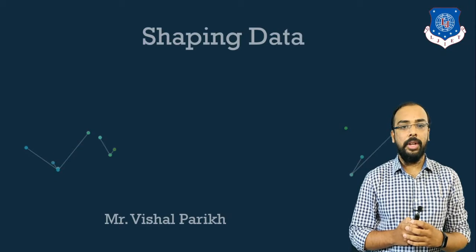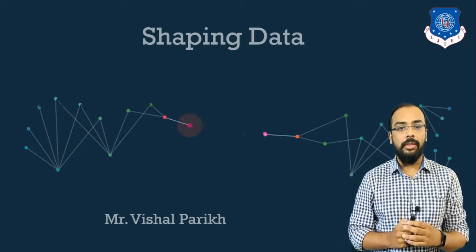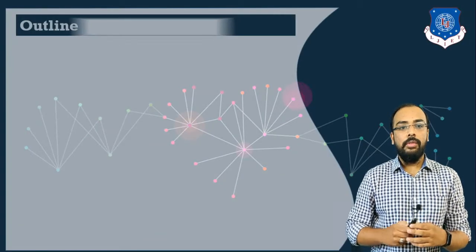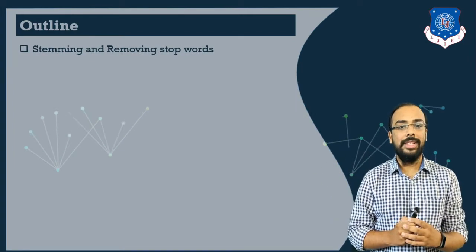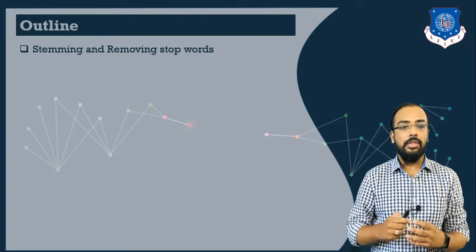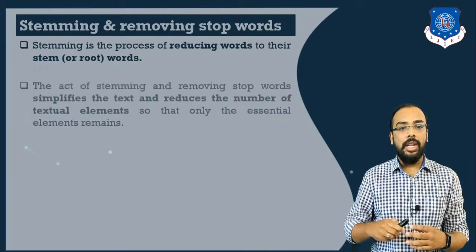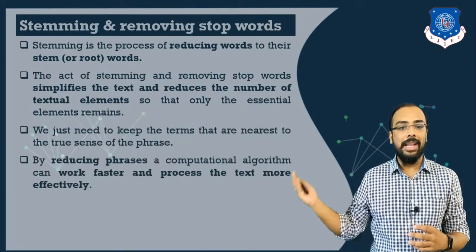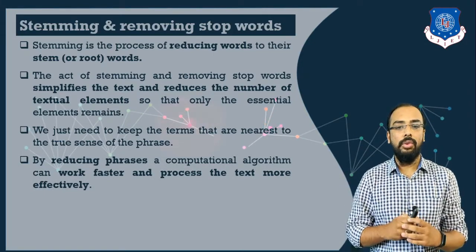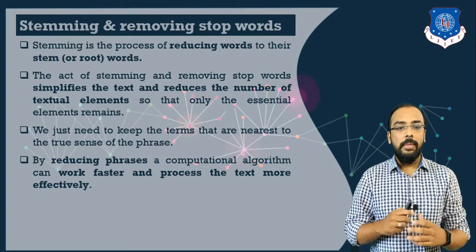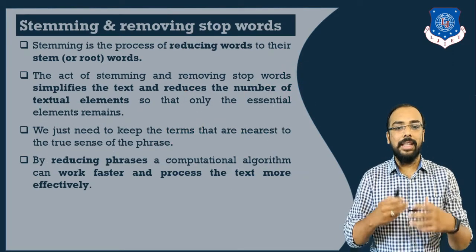Hello, I am Vishal Parekh. Today we are going to explore more on shaping of data. We will cover how we can perform stemming and removing of stop words inside our text documents. Stemming is a process of reducing words to their stem or root words. We do this because it simplifies our text and reduces the number of textual elements inside our document.